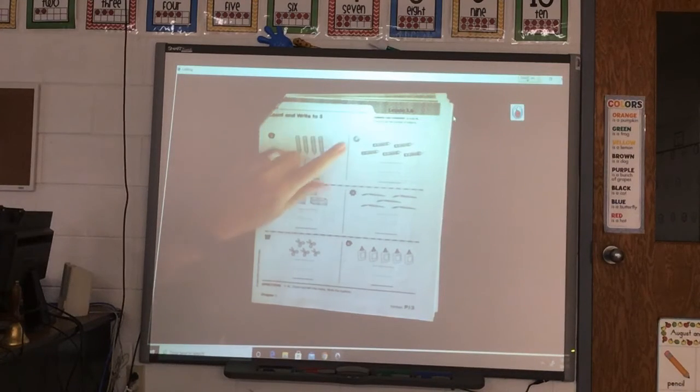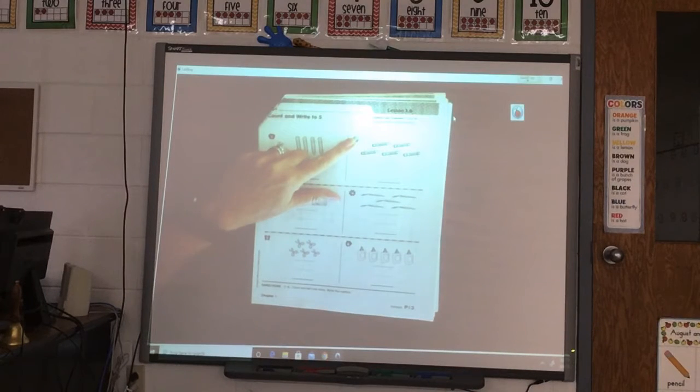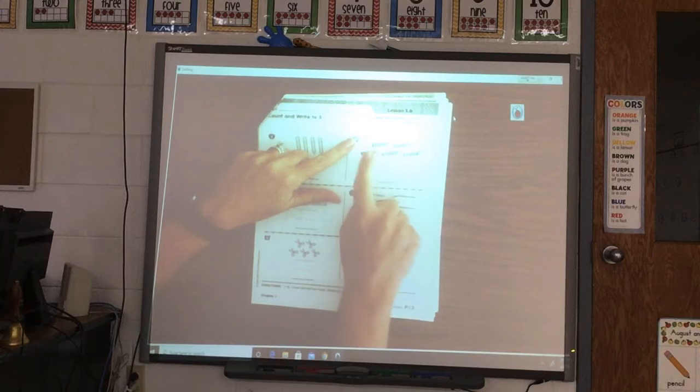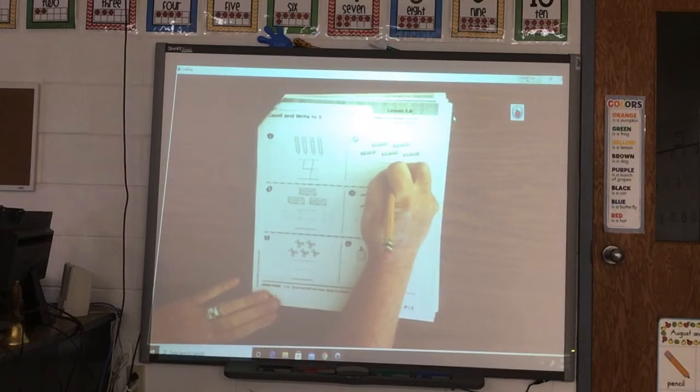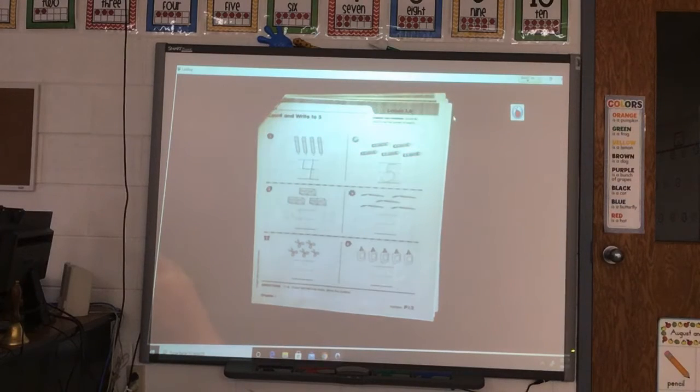Alright, next we are over here on the sun. We see some crayons. Let's count them. 1, 2, 3, 4, 5. Alright, 5 is our new number. It can be a little tricky. Put your pencil at the top, go over and make his hat, go down to the dotted line to make his back, go around to make 5's tummy, round and fat.